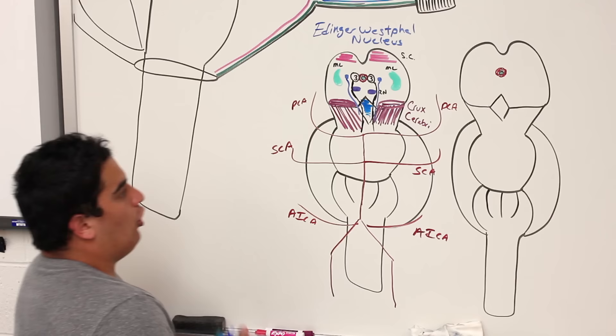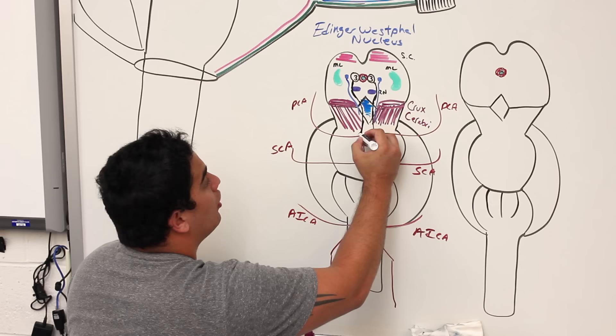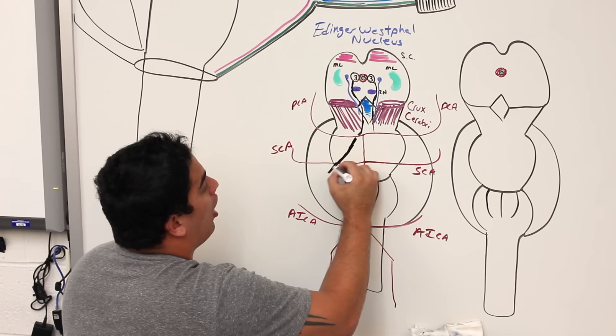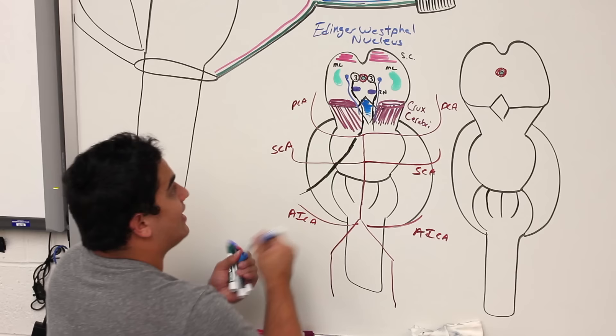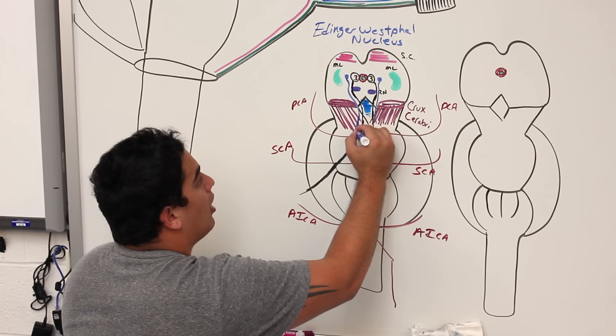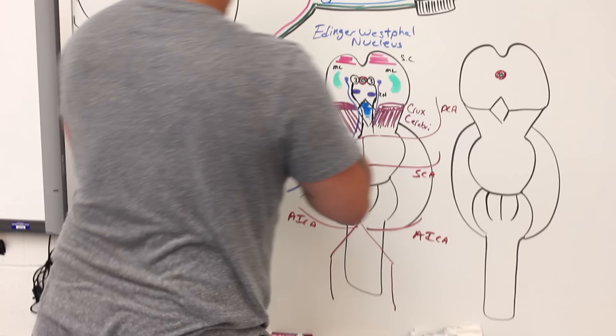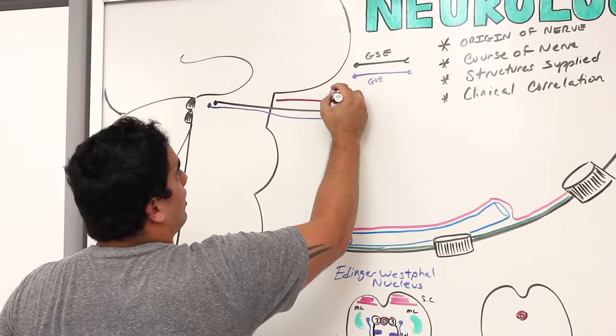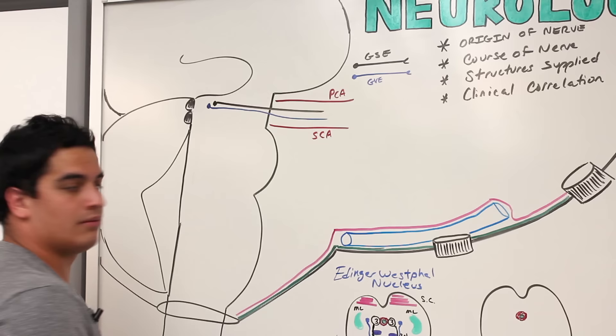The third cranial nerve — along with its parasympathetic fibers — runs under the posterior cerebral artery and above the superior cerebellar artery. So above the nerve is the posterior cerebral artery, and below it is the superior cerebellar artery.